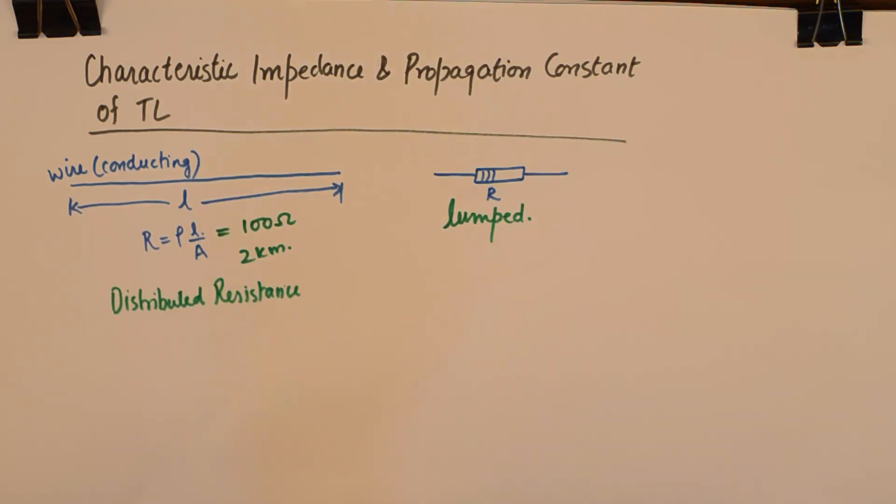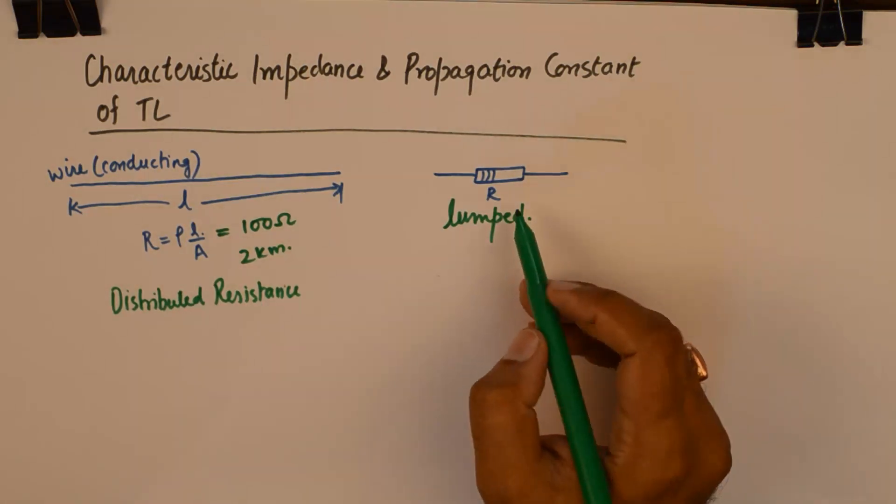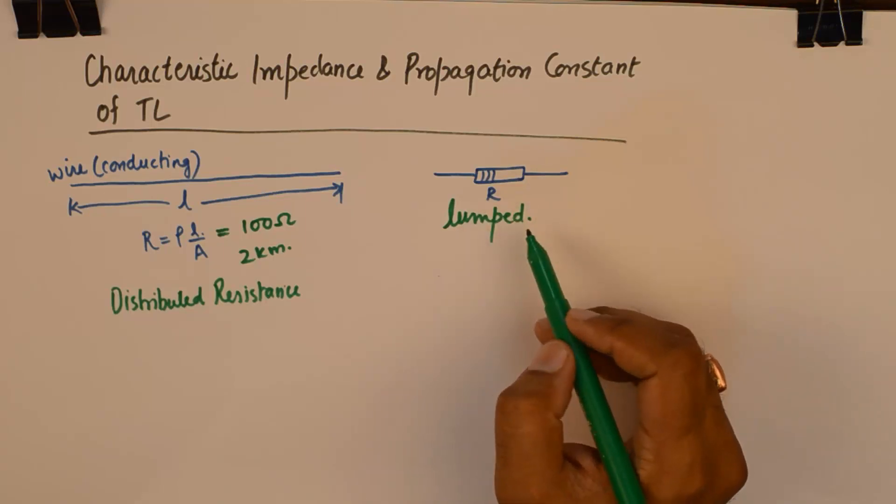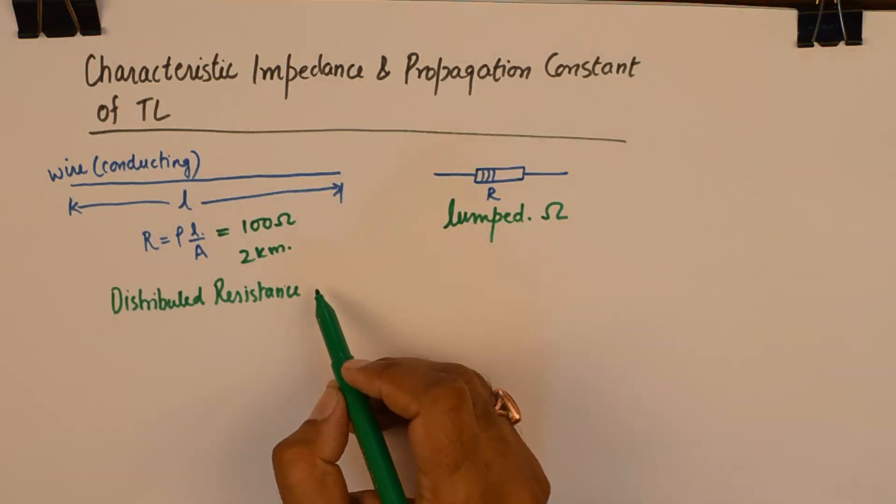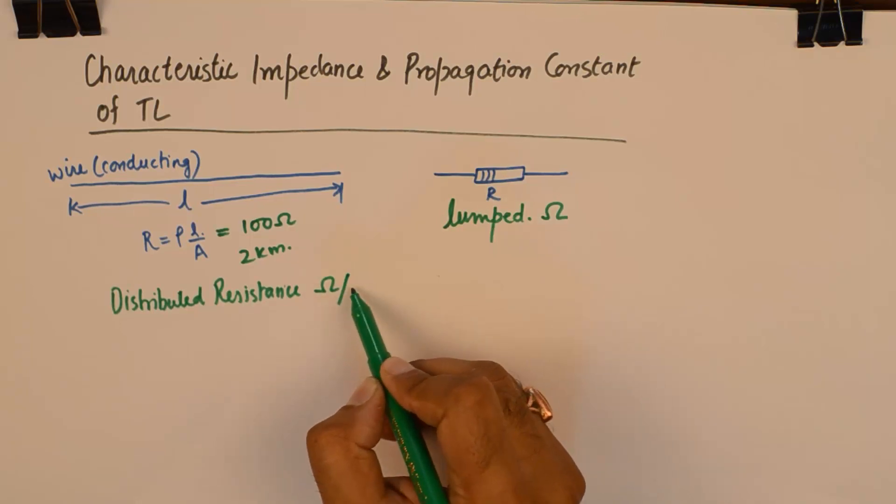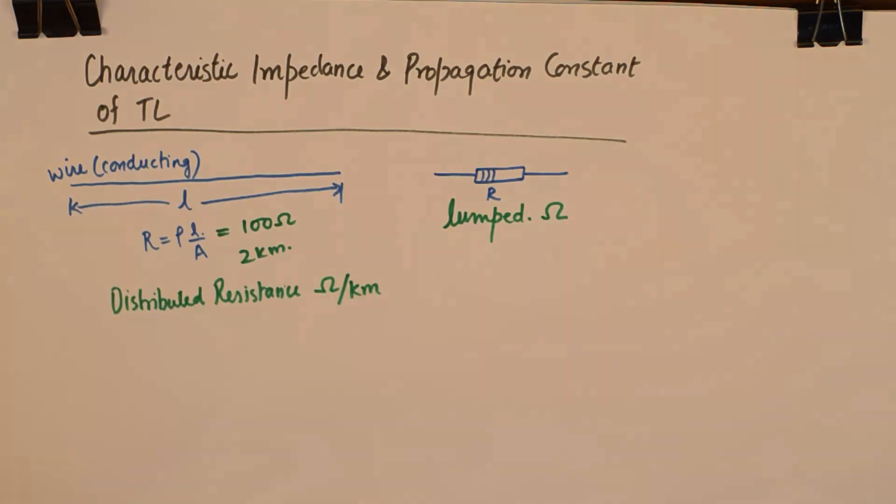Another important point is that the units of distributed resistance is also not the same as compared to resistance. Resistance of a lumped element is expressed in terms of ohm whereas distributed resistance is expressed in terms of ohms per kilometer or ohms per meter.